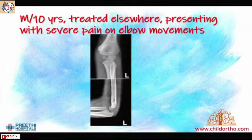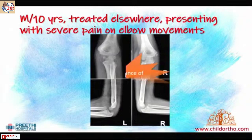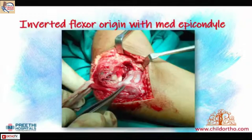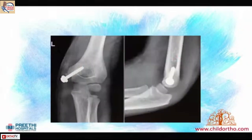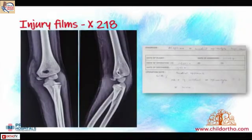This ten-year-old came with severe pain and not-so-bad-looking x-rays. But the moment you take the opposite x-ray, you realize that the piece on the outer side of the right elbow is on the inner side of the left. When you open up, you find the medial condyle along with the entire flexor origin is within the joint. All you need to do is bring it out and put a screw in — and this is the long-term follow-up of the same child.